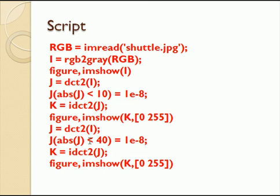Then I repeat the process, only this time I set the limit to 40 — so anything below 40, I set to 0. Now I'm taking even more important frequencies and tossing them out too. This picture will be degraded relative to the first one, but I'm throwing out more data, so the file would be smaller, or the number of pixels I care about would be smaller.